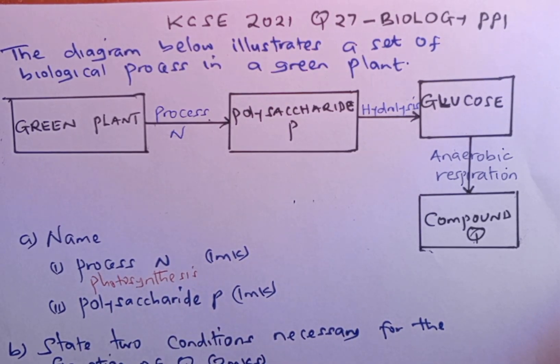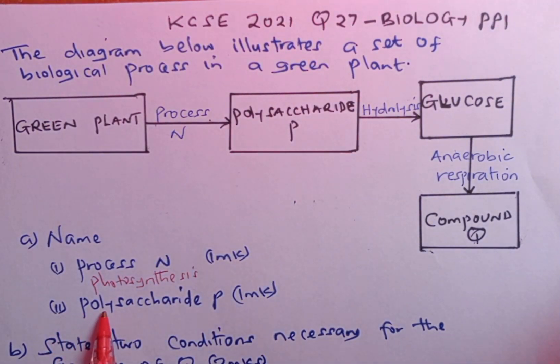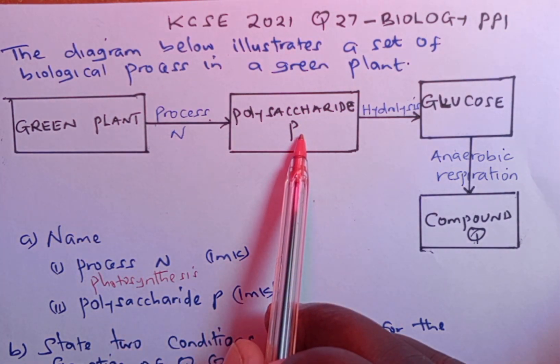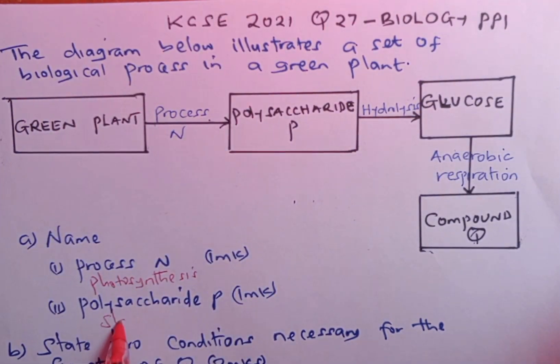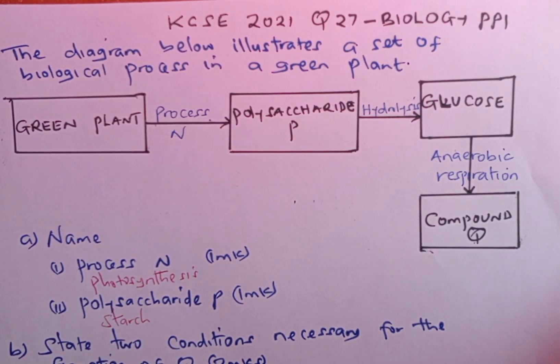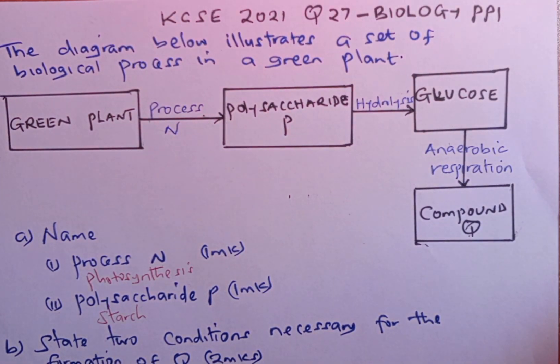We move down to Roman 2. We are supposed to identify the polysaccharide P. The polysaccharide P, which is present as stored food in plants, we call it starch. Starch is one of the complex carbohydrates, which is a polysaccharide.